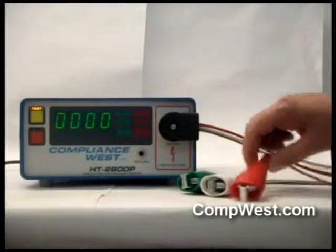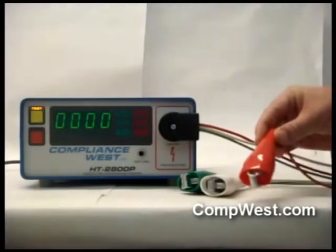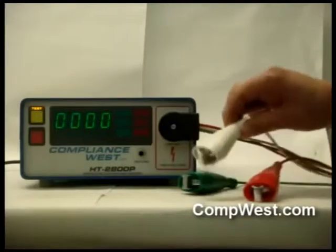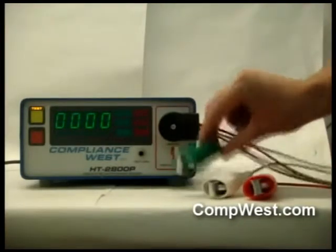Red connects to one hot. Connect a jumper to the other hot so they are connected together. White connects to the neutral bus. Green connects to the ground bus.